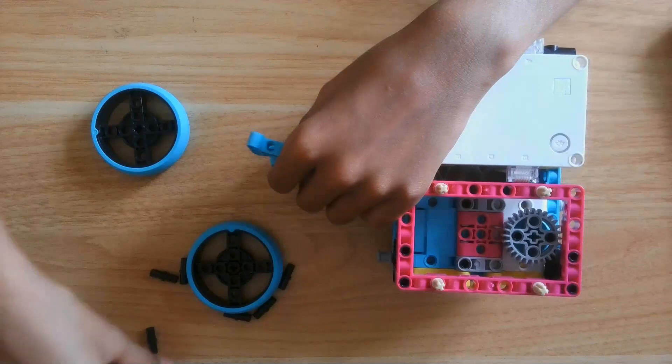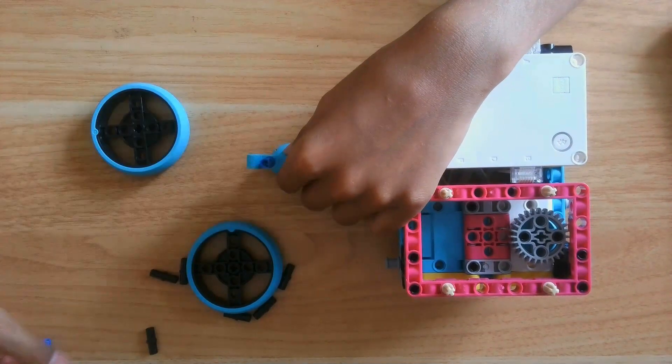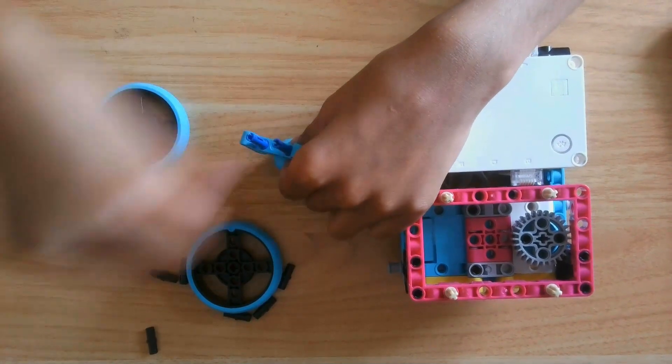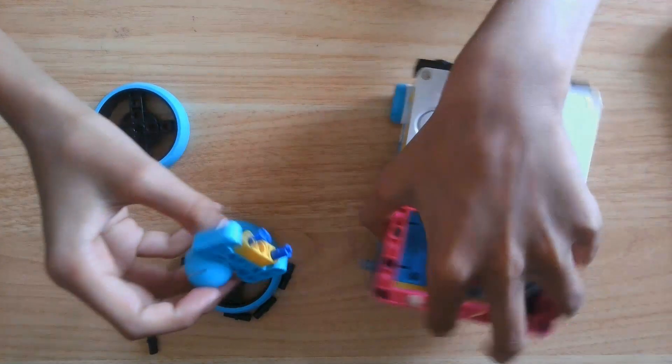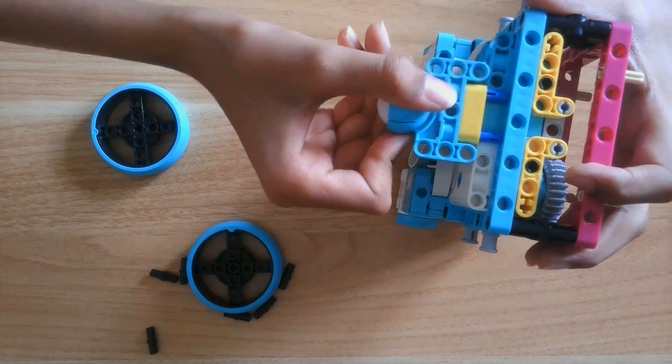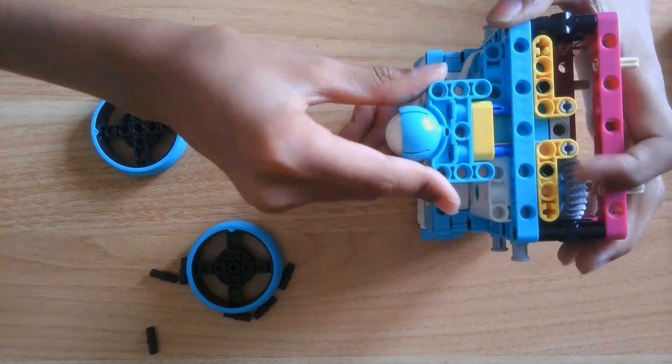Now, for the castable, you're going to want to get two blue pins and one three beam. You're going to put like so. And then you're going to put that in the middle at the very front where the motor is.